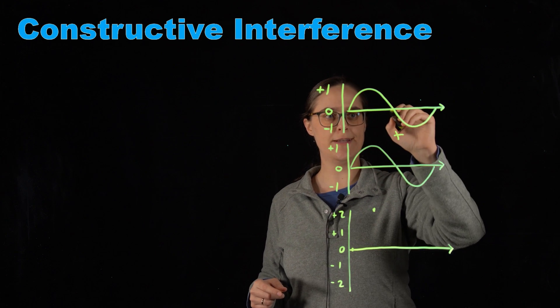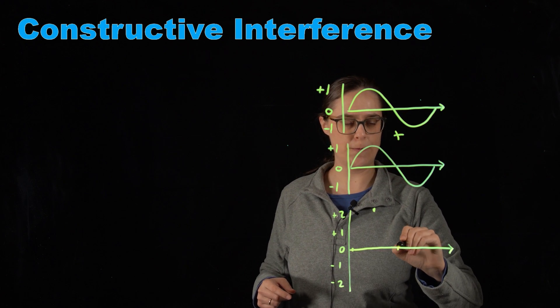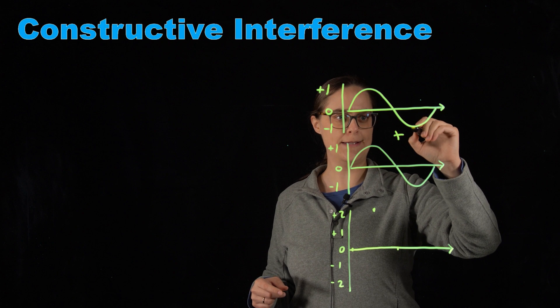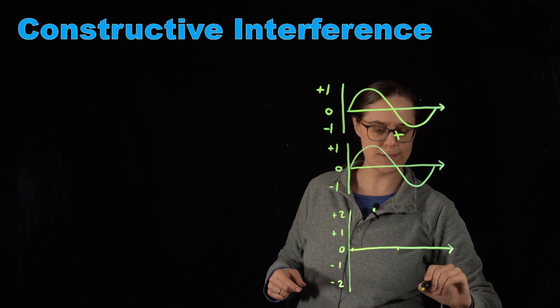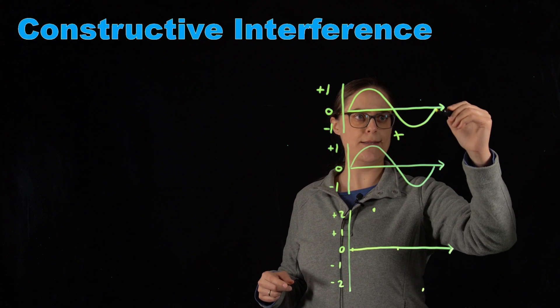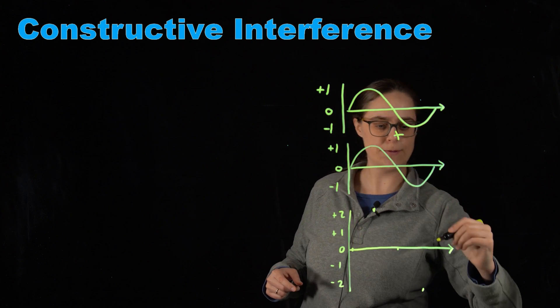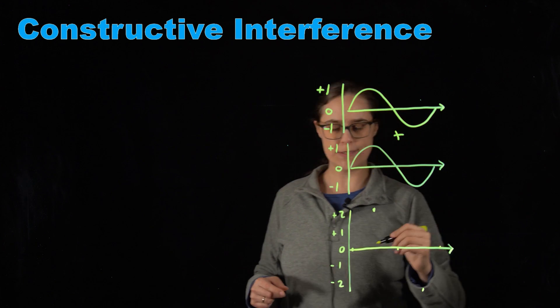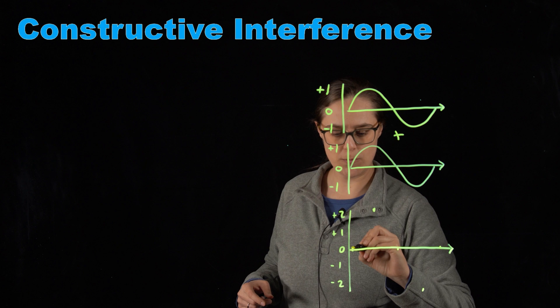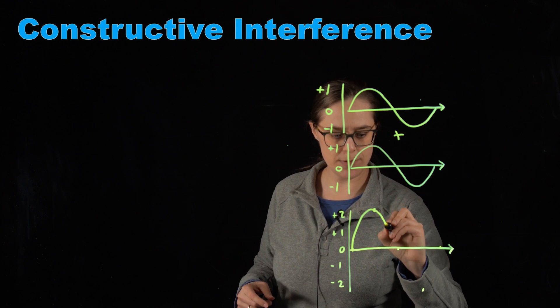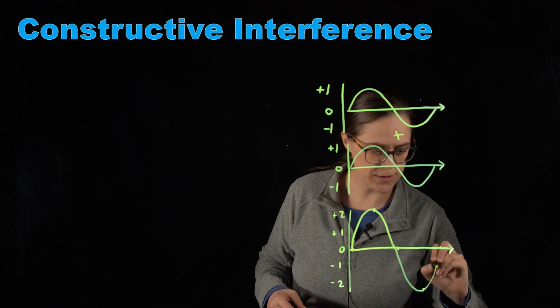Here we're crossing the line again, so 0 plus 0 equals 0. Now the valley, negative 1 plus negative 1 equals negative 2, and at the end crossing the line again, 0 plus 0 equals 0. The resultant wave that we would get would be same shape but with a larger amplitude.